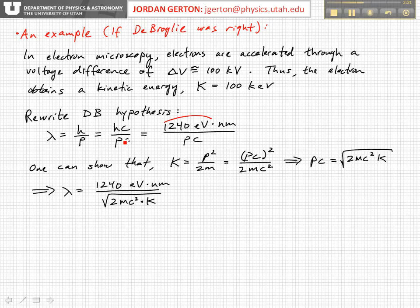We can also show that the kinetic energy of a particle equals the momentum squared, the three momentum squared, divided by two times its mass. We multiply top and bottom by C squared, which allows us to solve for the quantity PC in terms of the kinetic energy and the rest energy, MC squared.